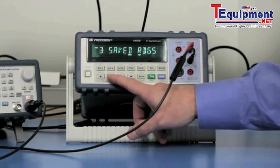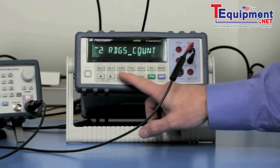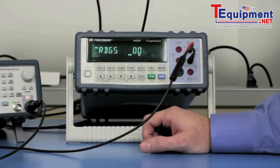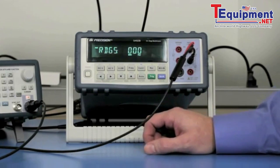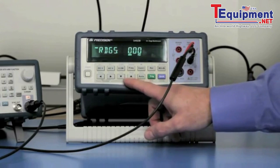Next, we need to set the readings count. This is how many readings you want to record. And the 5492B can record up to 512 readings. So I'm going to set it for 512.